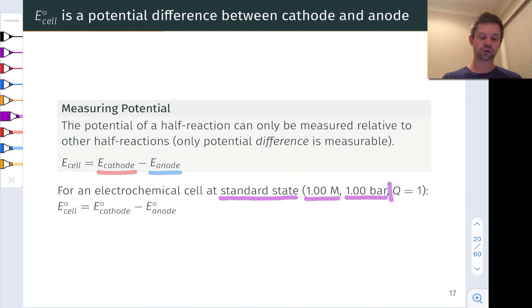The bigger conceptual idea behind the standard state is that in a galvanic cell at standard state, the reaction quotient, and yes this is the reaction quotient from our earlier discussions of equilibrium, is equal to one. And the standard state conditions of one mole per liter, one bar, one atmosphere, etc., make sure that this is the case for an electrochemical cell at standard state.